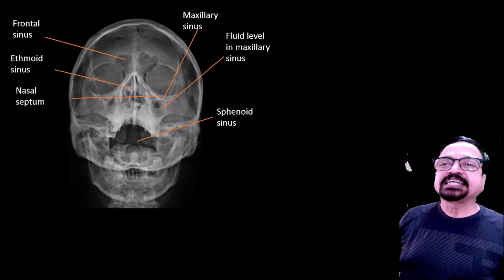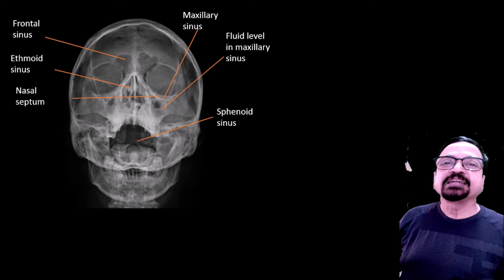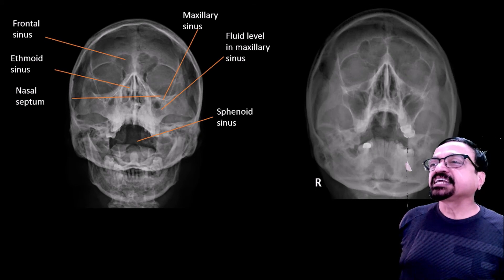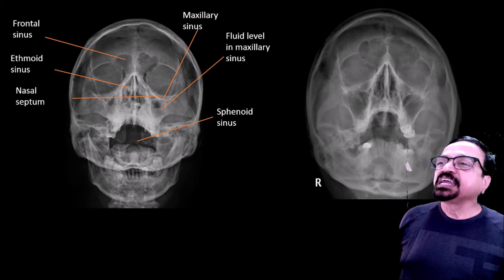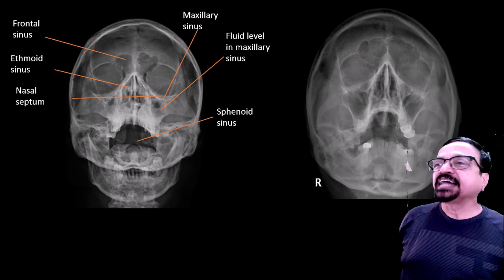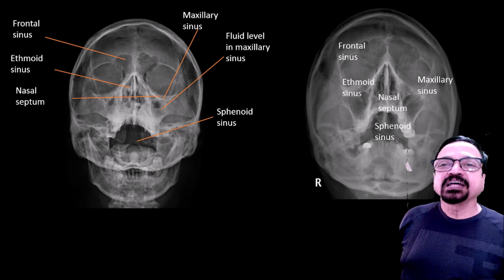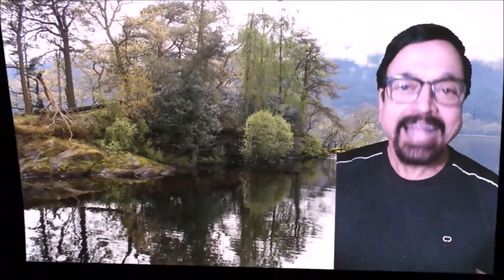Here we are seeing the maxillary sinus showing a fluid level. This X-ray must be taken in a sitting or standing position to demonstrate the fluid level. We can also see the nasal septum, frontal sinus, maxillary sinus, and the sphenoid sinus in the open-mouth view. If pathology, particularly inflammatory, is suspected, an erect position must be used. Most patients coming for this view have sinus pathology, so a standing Waters view is preferred.